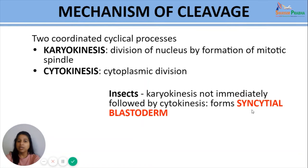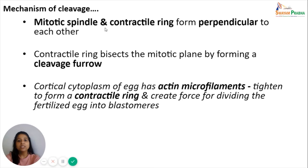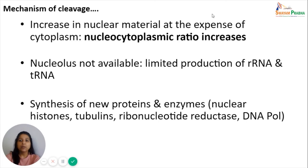During cleavage, the mitotic spindle and contractile ring form perpendicular to each other. The contractile ring bisects the mitotic plane by forming a cleavage furrow. The cortical cytoplasm of the egg contains actin microfilaments which tighten to form a contractile ring, creating force for dividing the fertilized eggs into blastomeres. There is an increase in nuclear material but no increase in cytoplasm, so the nucleocytoplasmic ratio of the resulting blastomeres increases. The nucleolus is not active during cleavage, resulting in limited production of ribosomal RNA and transfer RNA.